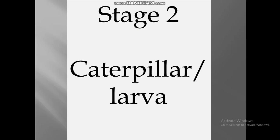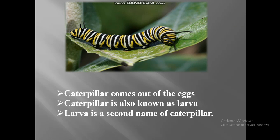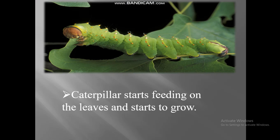Stage number 2: caterpillar, also known as larva. The caterpillar comes out of the eggs. Caterpillar is also known as larva. The caterpillar starts feeding on the leaves and starts to grow.